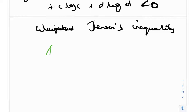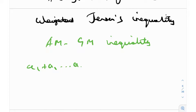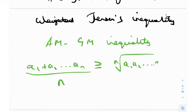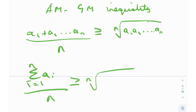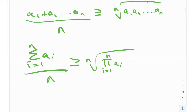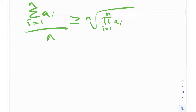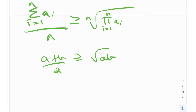So what is AM-GM — the standard AM-GM inequality? Basically, (a₁ + a₂ + … + aₙ) / n ≥ the nth root of (a₁ · a₂ · … · aₙ). In sigma notation: (Σaᵢ from i=1 to n) / n ≥ the nth root of (Πaᵢ from i=1 to n). The most basic case is (a + b)/2 ≥ √(ab).